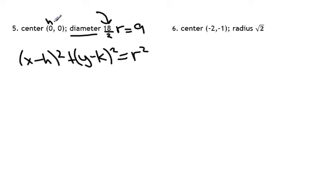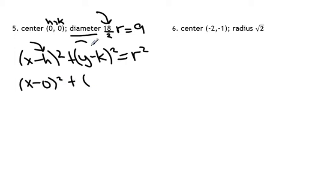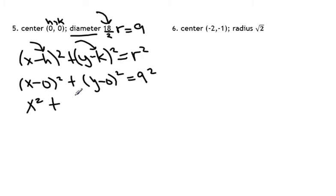The center is at h comma k. So to substitute the values into the equation, we have x minus zero squared plus y minus k squared, which is zero. And that equals our radius squared. So we have x minus zero, which is just x, and we're going to square it. y minus zero is just y, and we're going to square it. And that equals nine squared, which is 81.